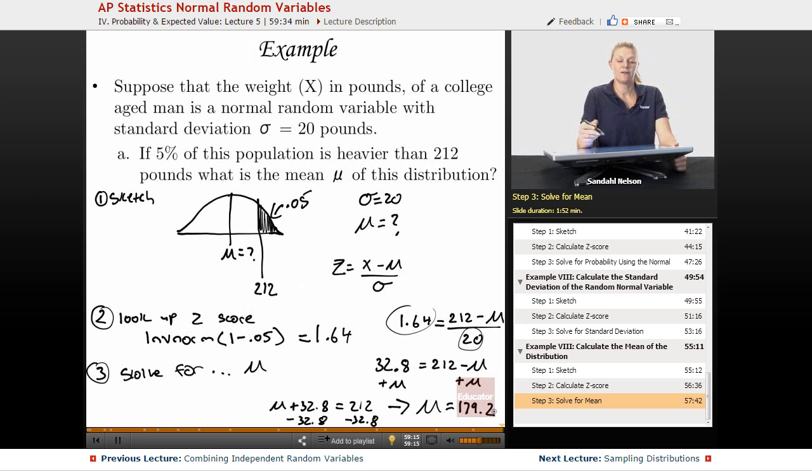So we know that if our probability of being greater than 212 is 5% and the standard deviation is 20, we can back solve and find that the mean of these college-aged men is 179.2 pounds. Thank you for visiting educator.com. Hope to see you for the next lesson.